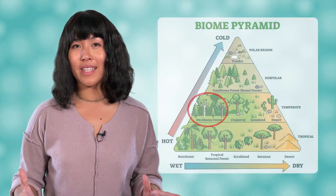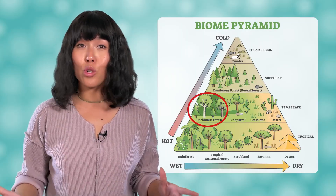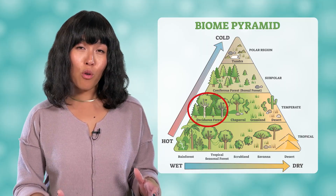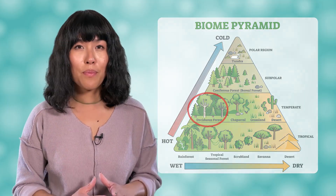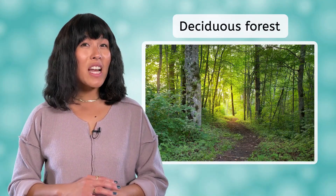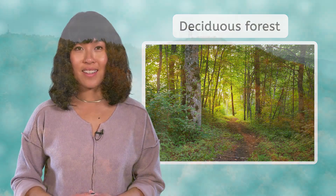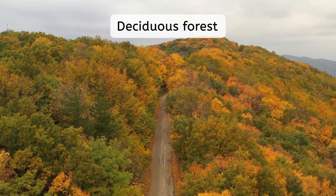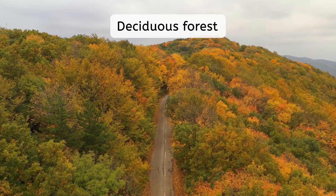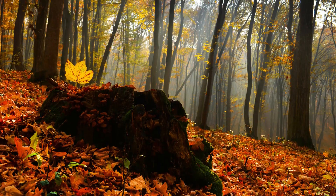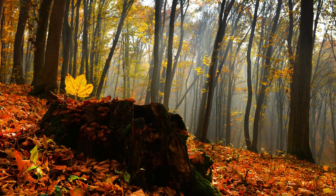Another common and important biome on Earth is the deciduous forest. How does its climate compare to the tropical rainforest on our biome pyramid? They are both wet climates, but deciduous forests are listed as temperate, not tropical. While deciduous forests receive a significant amount of rainfall, they are not as warm year-round as tropical forests. These forests are found around the world at mid-latitudes and are dominated by deciduous trees, which lose their leaves in winter. The dead leaves that pile up on the ground decompose and provide nutrients for new growth, creating a healthy cycle for the ecosystem.